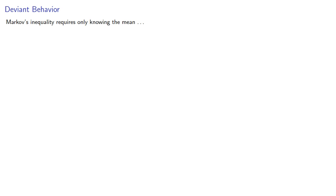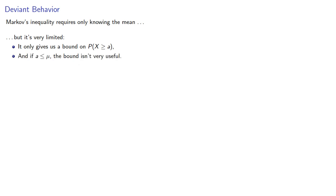Markov's inequality requires only knowing the mean, but it's also very limited. It only gives us a bound on the probability that x is greater than or equal to some number, and if the number we're looking at is less than or equal to the mean, the bound isn't actually very useful. But you get what you pay for — Markov's inequality only requires that we know the mean, so can we pay a little more and get a better bound?